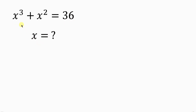Observe what we have on the left hand side. We have a perfect cube and we also have a perfect square. So the sum of a perfect cube and a perfect square gives 36. So all we have to do is split 36 into the sum of a perfect cube and a perfect square.